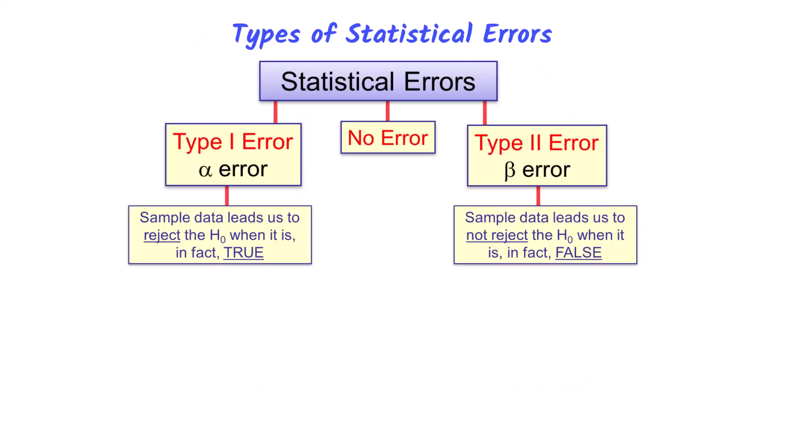In this class, we are going to focus on type 1 errors, which is when the sample data leads us to reject the null when it is true. The decision maker controls or chooses the alpha level, or how much error it is willing to accept. With a type 2 error, the sample data leads us to not reject the null when it is false.